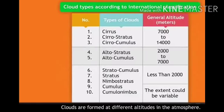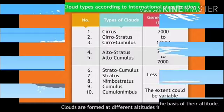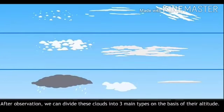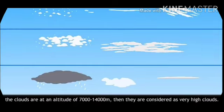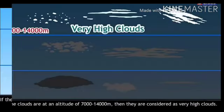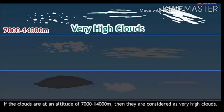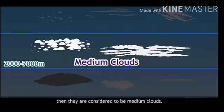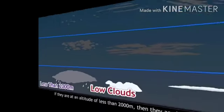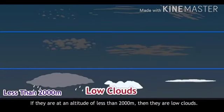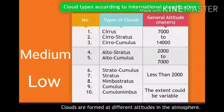Clouds are formed at different altitudes in the atmosphere, and therefore we divide them into three main types. If clouds are at an altitude of 7000 to 14000 meters, they are considered very high clouds. An altitude of around 2000 to 7000 meters is considered medium clouds. If they are at an altitude of less than 2000 meters, they are low clouds — high, medium, and low according to altitude.